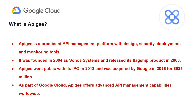Now we know what an API is and that it requires to be managed. Let's understand what Apigee is and a bit about its history. Apigee, a leading API management platform, offers tools and services for designing, securing, deploying, and monitoring APIs. It was founded in 2004 as Sonova Systems. Apigee launched its flagship product called the Apigee Enterprise API Platform in 2008. It went public with its IPO in 2013 and was later acquired by Google in 2016 for $625 million. Since then, Apigee has continued to evolve as part of Google Cloud, providing advanced API management capabilities for organizations globally.